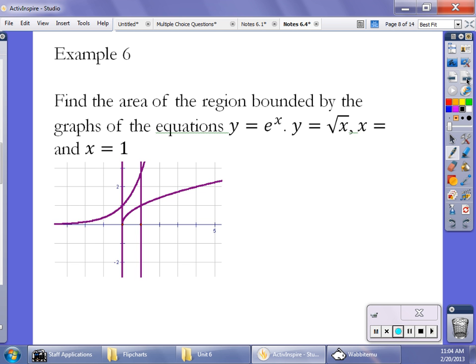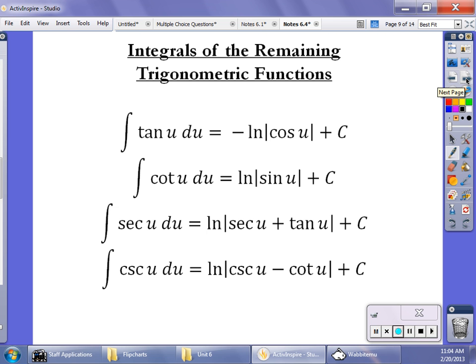So again, this is the same idea where I have the graphs of e to the x going up here. I have the square root of x going right here, and then it's bound by x equals 0 and x equals 1. So it's looking for the area of this region right here. So it's just simply the integral from 0 to 1. The top graph is e to the x. The bottom graph is minus the square root of x dx. And now we could integrate that by hand. I'm not going to. You can go ahead and punch it in your calculator if you want to see how to do that. I'm kind of hurrying along. Pause the video if you need to write stuff down.